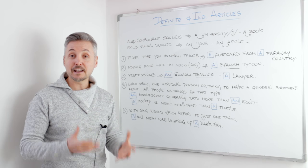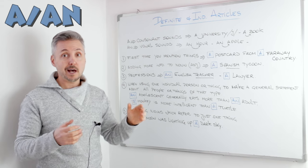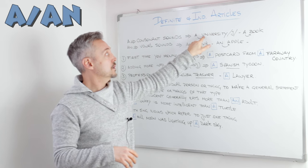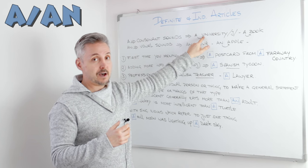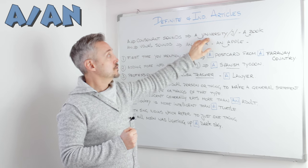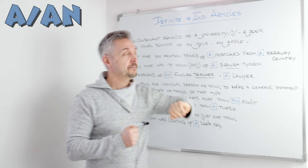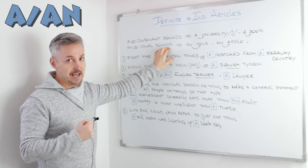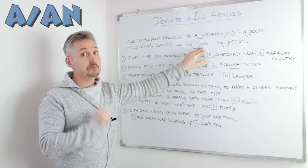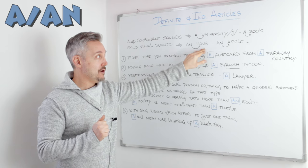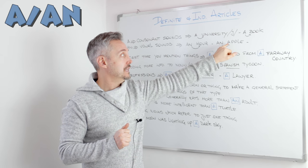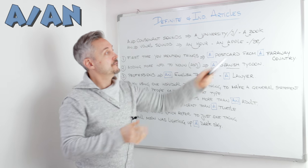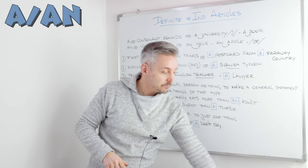Now let's talk about the indefinite article — 'a' or 'an'. We use 'a' before consonant sounds. Like I said, 'a university' — the 'U' here is a vowel, but the sound is a 'Y', a consonant sound. So 'a university', 'a book', etc. And 'an' before vowel sounds — 'an hour'. The 'H' is mute, so 'an hour'. 'An apple' — the 'A' is a vowel sound, so it's 'an apple'.